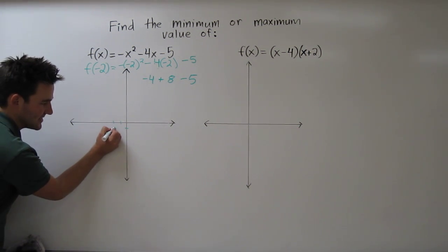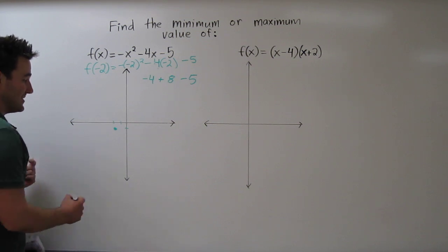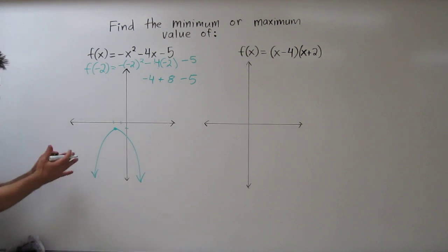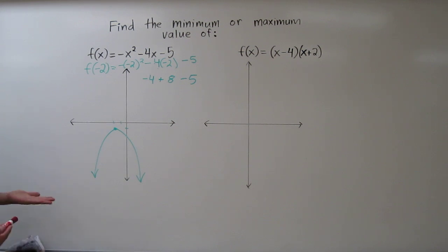So it looks like our vertex is going to be right there. Also, by looking at the coefficient of the x squared term, we see that this parabola points down. So here's a rough graph of what this function looks like. Now, my goal was to find the minimum or maximum value of the function.